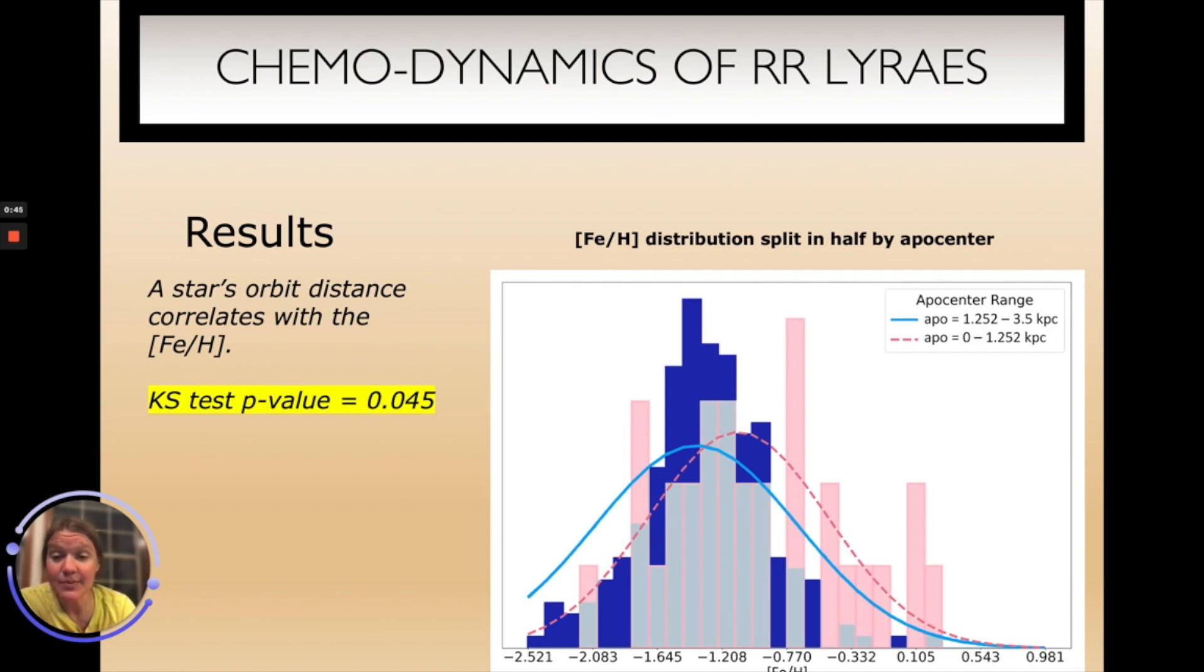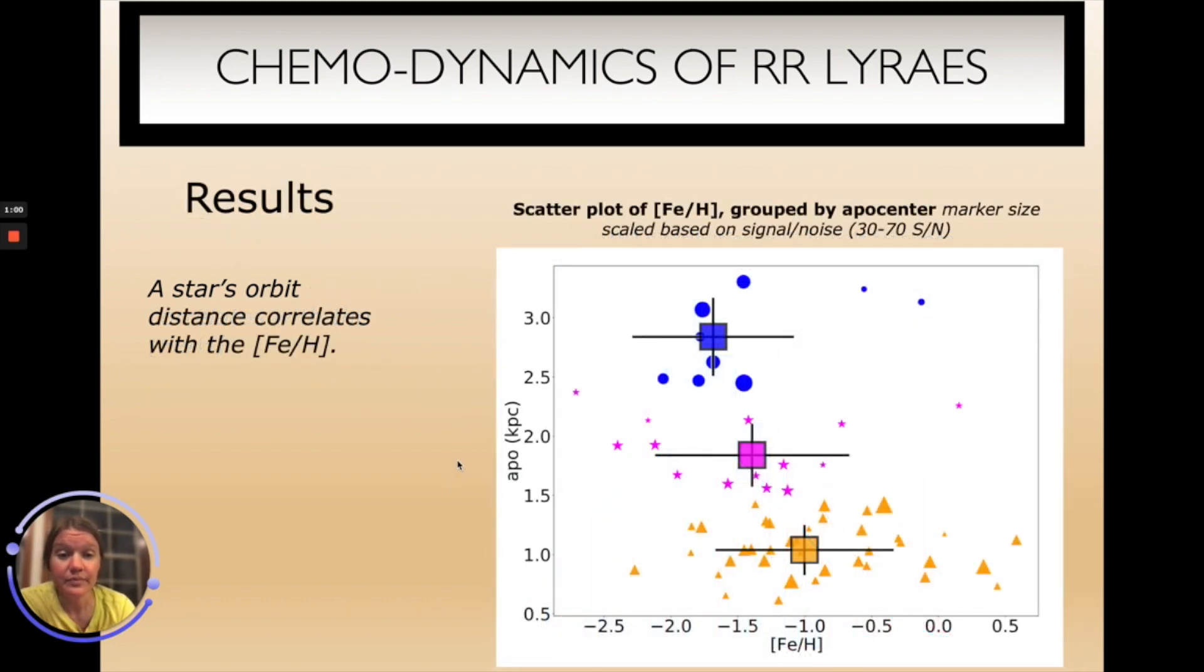A KS test gives a p-value of 0.045 indicating that we cannot be certain that these two populations of RR Lyrae stars with different apocenter distances came from the same parent population. Here is a scatter plot that shows the apocenter distance of an RR Lyrae star as a function of its metallicity. And again you see that the more tightly bound the RR Lyrae star is, the higher its metallicity. Such a correlation, such a metallicity trend is not seen in galactic latitude but is seen when you consider how tightly bound an orbit is, an RR Lyrae star's orbit is.